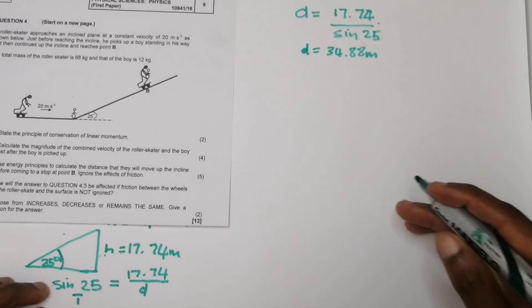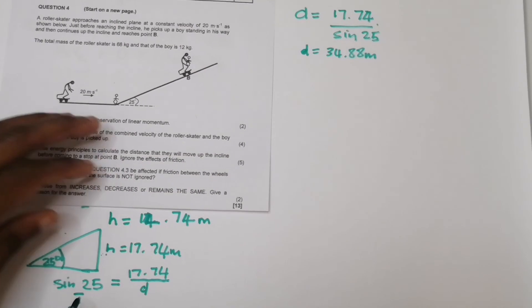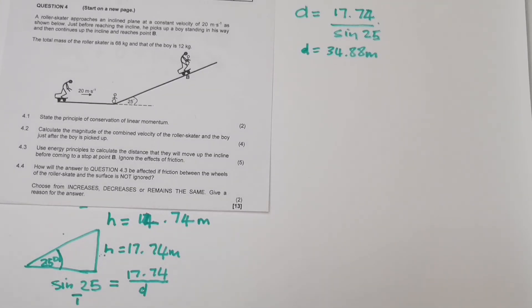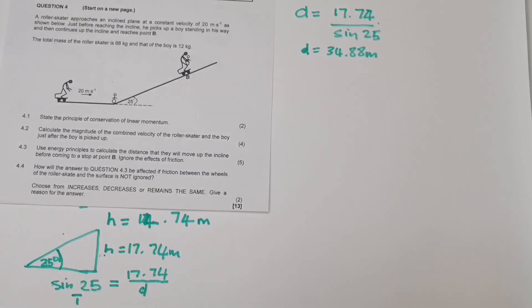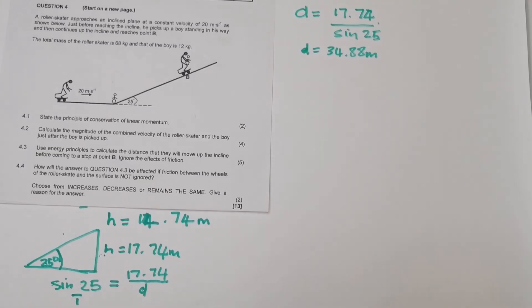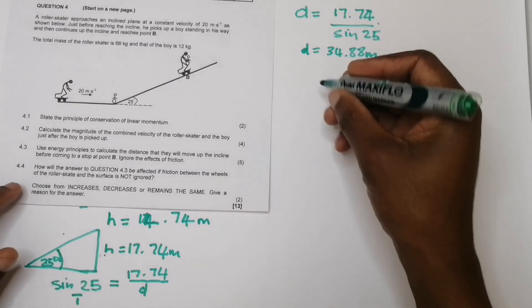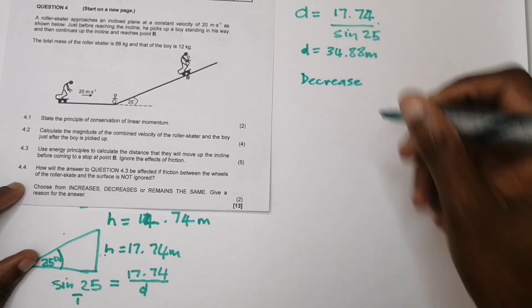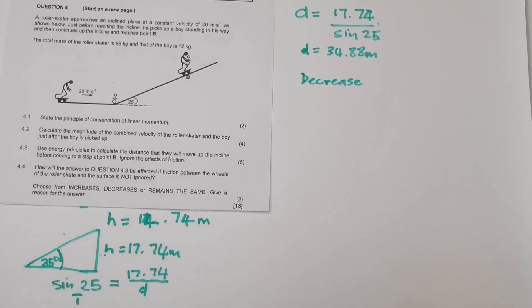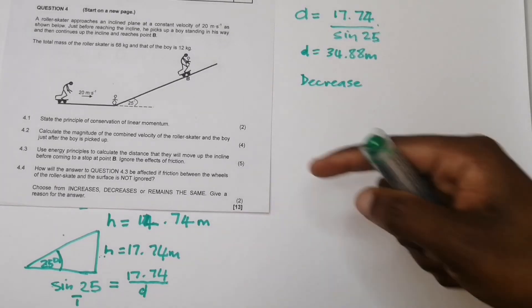The last question asks: how would the answer to 4.3 be affected if friction between the wheels of the roller skate and the surface is not ignored? Choose increase, decrease, or remain the same, and give a reason. The answer would definitely decrease — because introducing friction creates a net force in the opposite direction, which would reduce the distance covered up the incline.